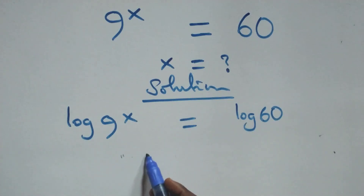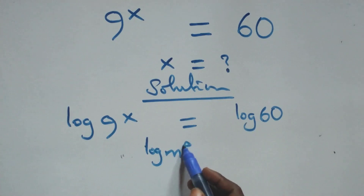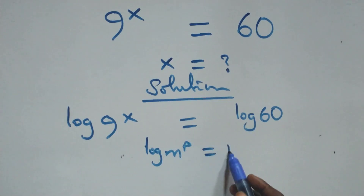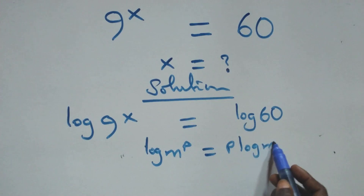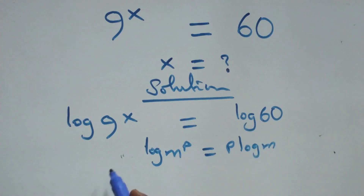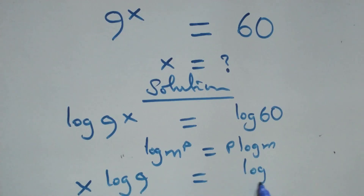Here we apply the power rule of logarithm, where log m raised to power p is the same thing as p·log m. That is, we have x·log 9 equals log 60.